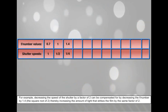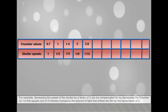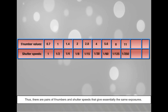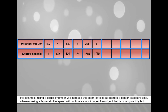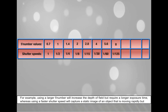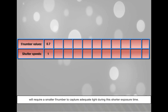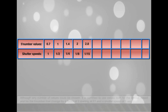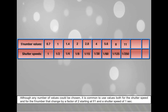For example, decreasing the speed of the shutter by a factor of 2 can be compensated for by decreasing the f-number by 1.4 (the square root of 2), thereby increasing the amount of light that strikes the film by the same factor of 2. Thus, there are pairs of f-numbers and shutter speeds that give essentially the same exposures. Using a larger f-number will increase the depth of field but require a longer exposure time, whereas using a faster shutter speed will capture a static image of a moving object but will require a smaller f-number. It is common to use values for both shutter speed and f-number that change by a factor of 2, starting at f/1 and a shutter speed of 1 second.